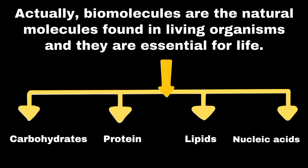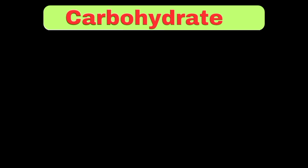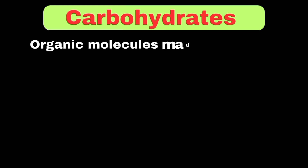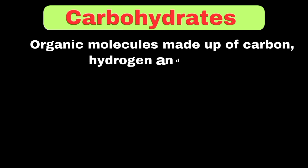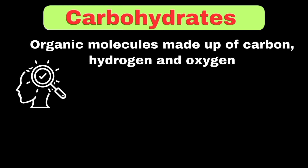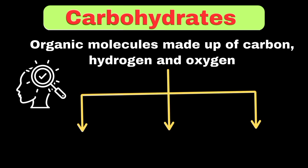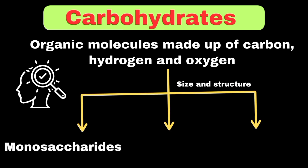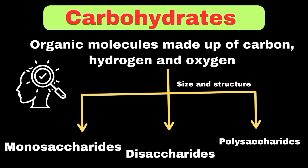Let's explain carbohydrates in detail. Carbohydrates can be defined as organic molecules made up of carbon, hydrogen, and oxygen atoms. We can divide carbohydrates into three main categories based on their size and structure: monosaccharides, disaccharides, and polysaccharides.